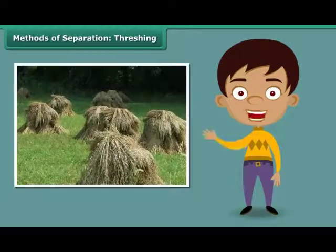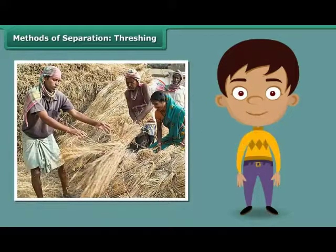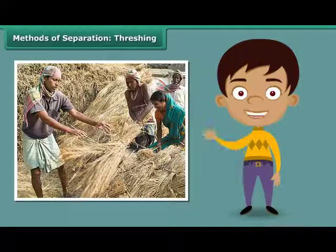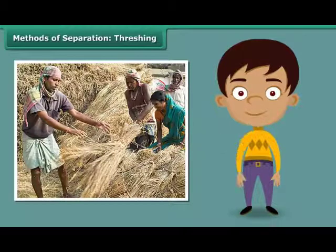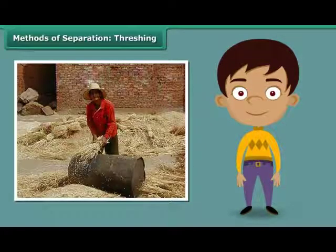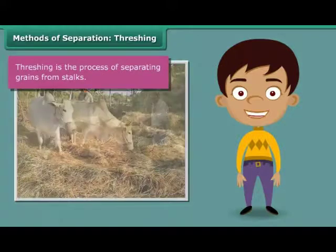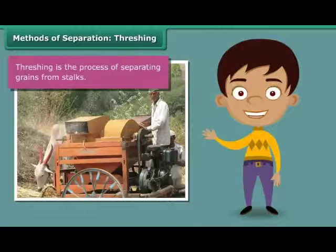You must have seen bundles of wheat or paddy stalks lying in fields after harvest. Have you pondered how a farmer separates the grains from these stalks? Once the wheat or paddy crop is harvested, the farmer ties the stalks together to form bundles. He then leaves the bundles to dry in the sun. Once the stalks are completely dried, the farmer beats them against a hard floor to free the grains. This process of separating grains from stalks is known as threshing. Bullocks, oxen and machines known as threshers are also used for this purpose.